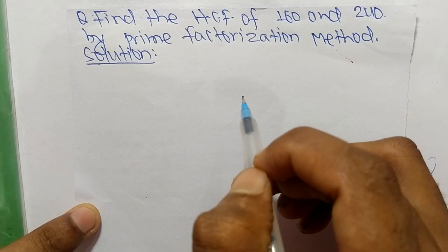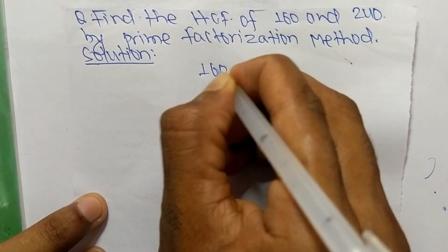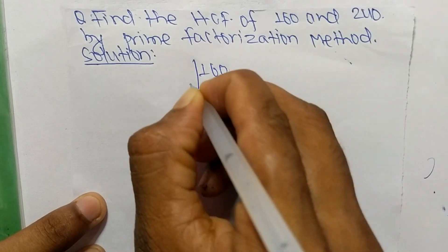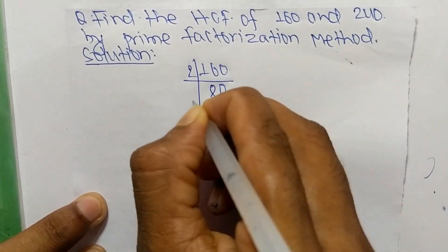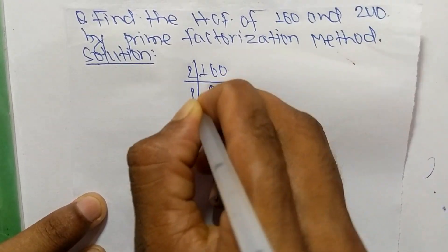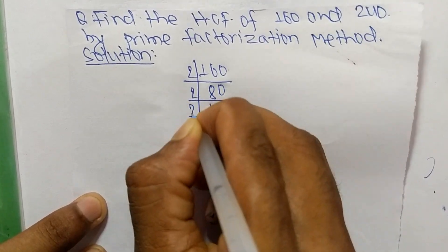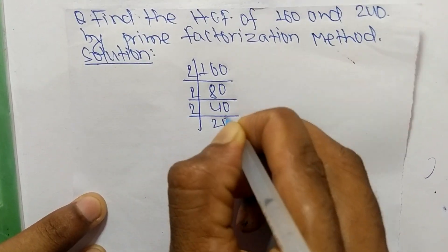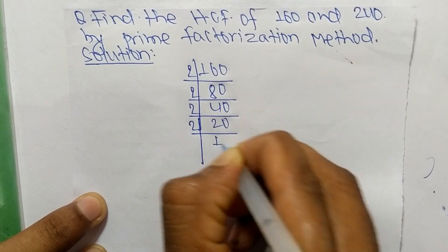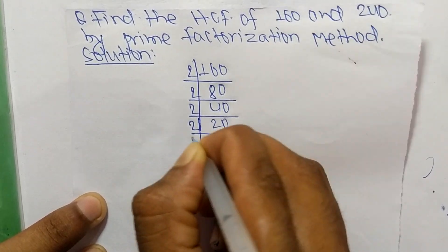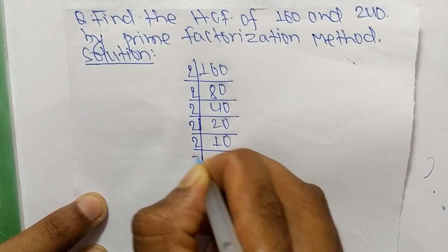First we find the prime factors of 160. It is 2 times 80, 2 times 40, 2 times 20, 2 times 10, and 2 times 5.